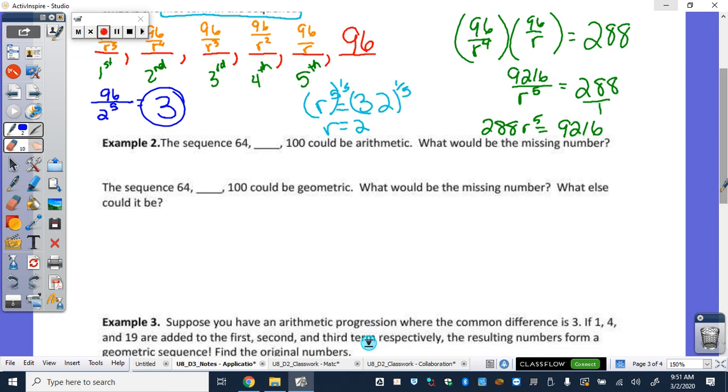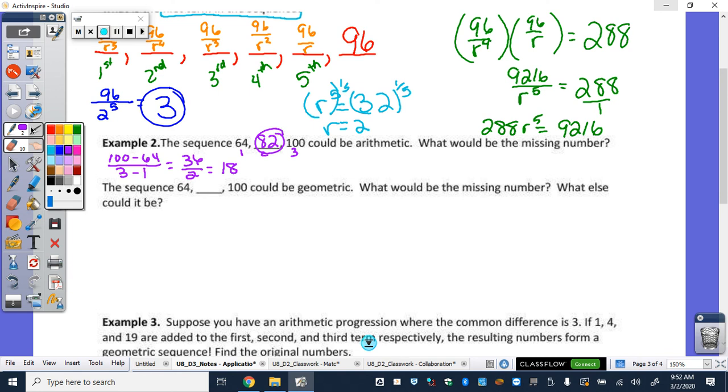So, example number 2 here. The sequence 64 blank 100 could be arithmetic. What would be the missing number, if it were? So, remember, slope. First, second, third term. So, we can do 100 minus 64 over 3 minus 1. So, 100 minus 64 is 36 over 2. So, our common difference is 18. So, 64 plus 18. Missing term could potentially be 82, if it's an arithmetic sequence.